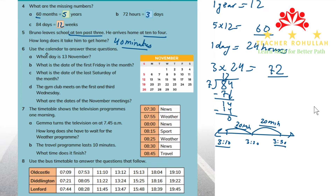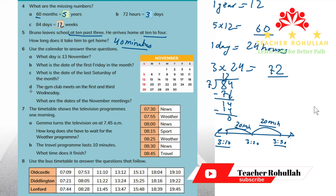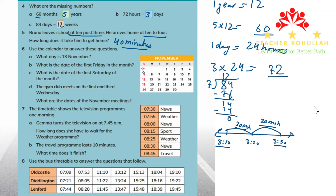In question six, it says: use the calendar to answer these questions. The calendar shows the month of November. We have parts A, B, C, and D to answer based on this November calendar.